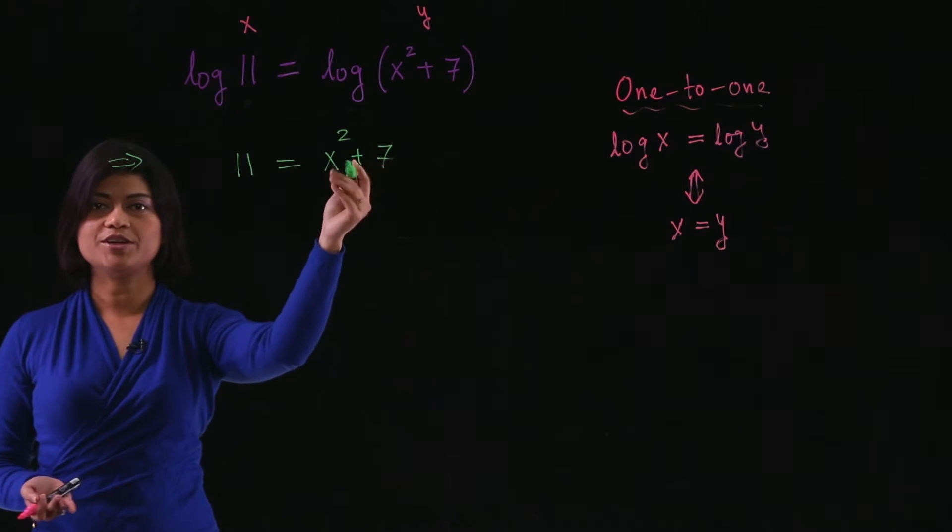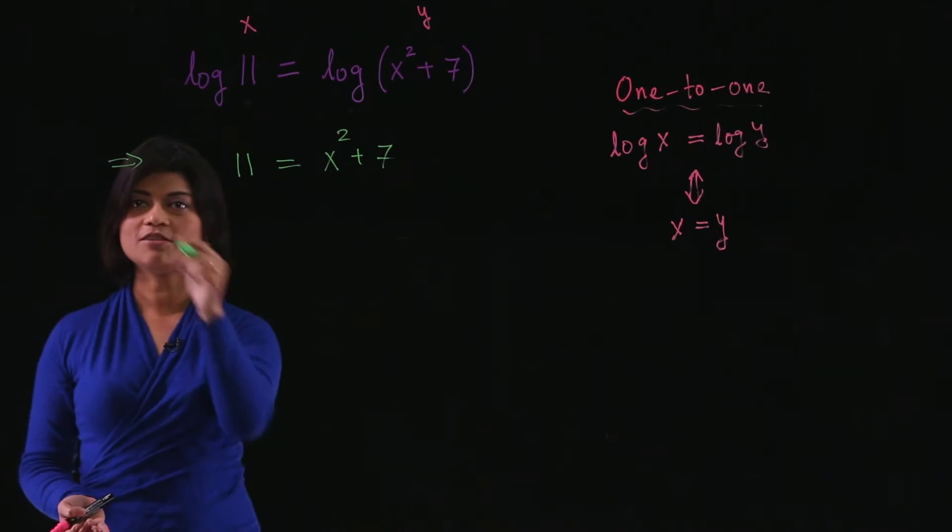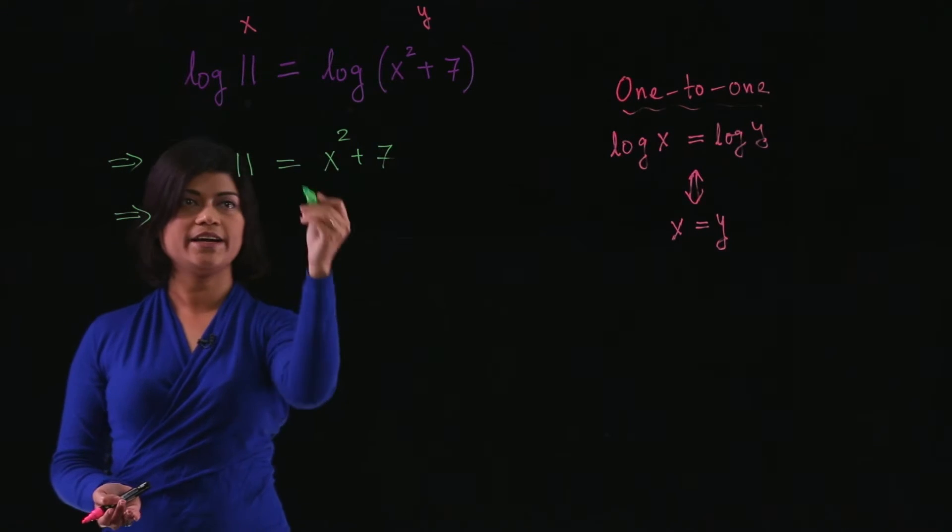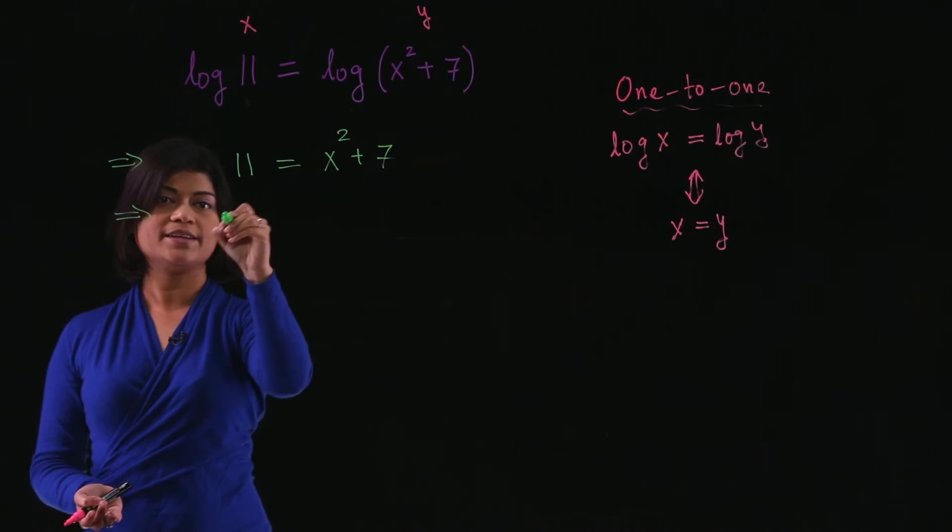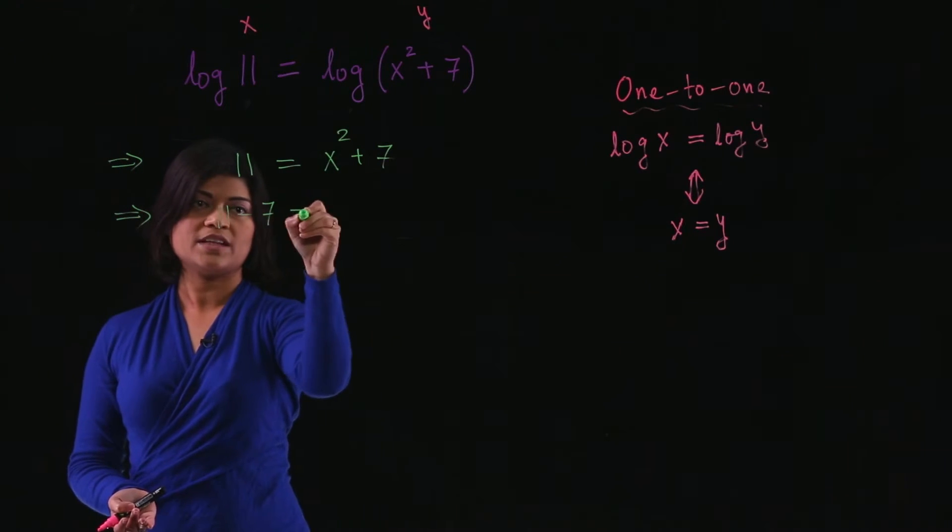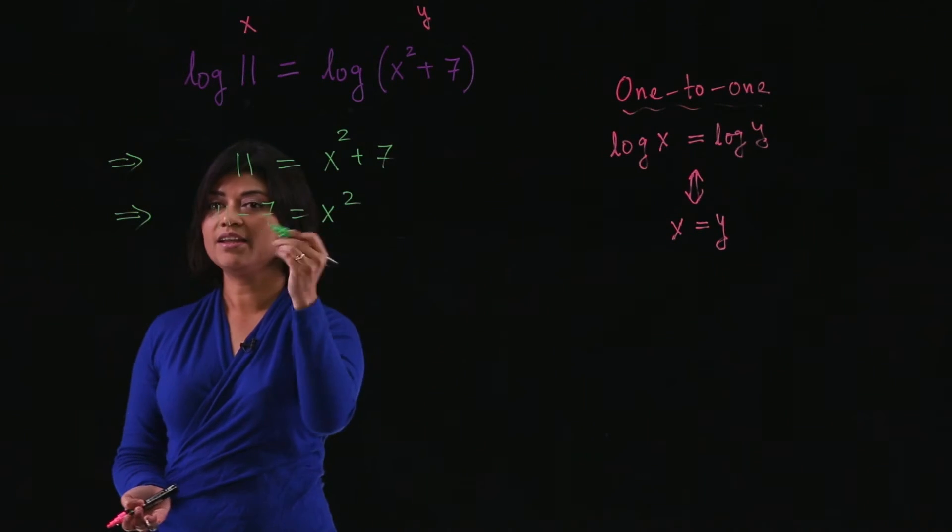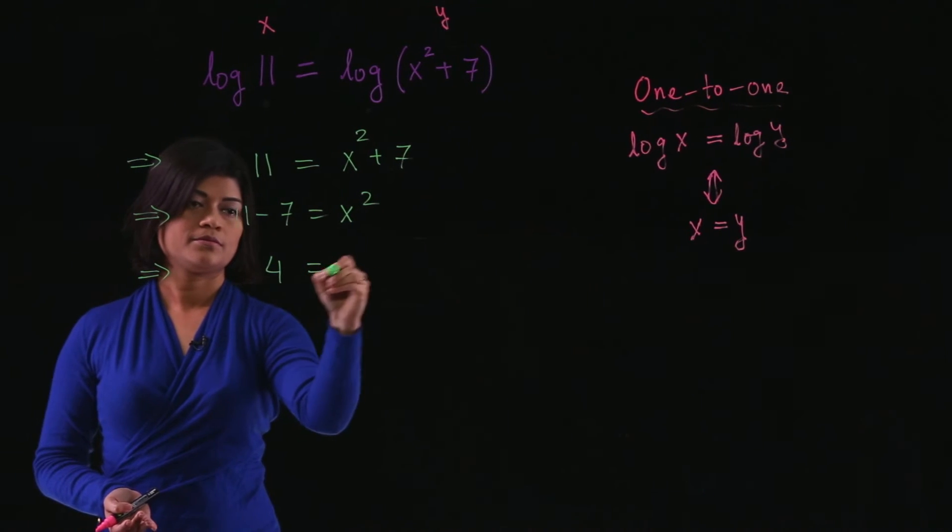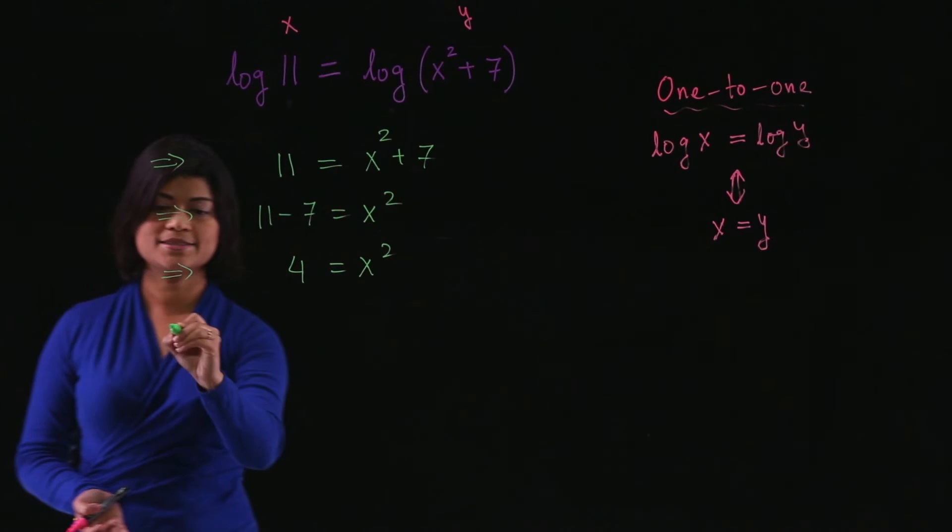Now we just have an equation in x, so you can solve for it. Bring the 7 to the other side, and you get 11 minus 7 equals x squared. And 11 minus 7 is 4, so x squared equals 4. What is x?